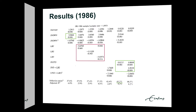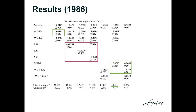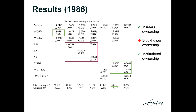For the 1986 sample, we see similar results. There is a positive relation between insider ownership and Q. There are no individual relations of blockholder ownership on Q. We also see a positive relation of institutional ownership and a positive relation of insiders plus blockholders on Q.